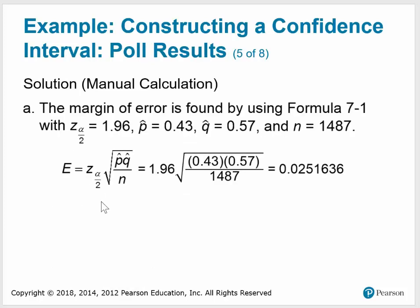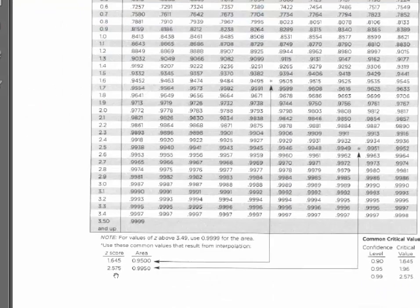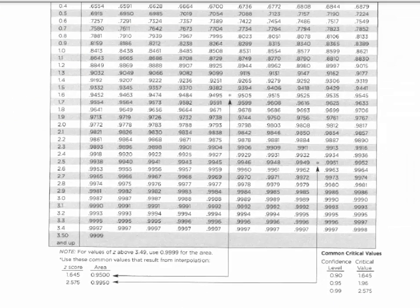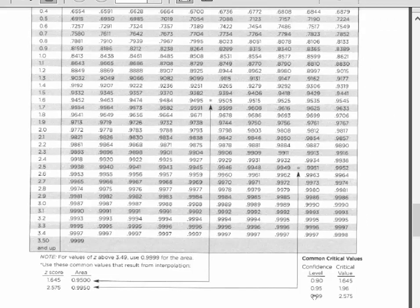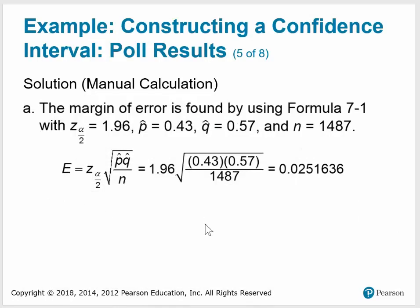With a 95% confidence level, Z of alpha over 2 is 1.96. Plugging into the formula: P-hat is 0.43, Q-hat is 1 minus P-hat = 0.57, and N = 1,487. This gives us the margin of error E.